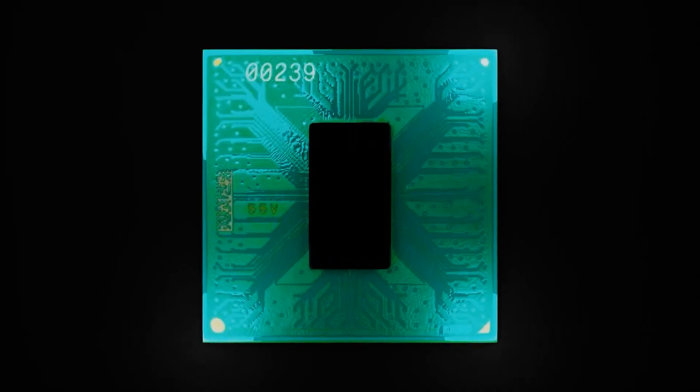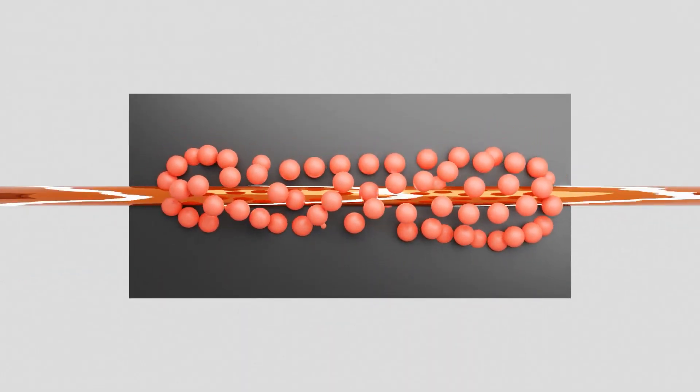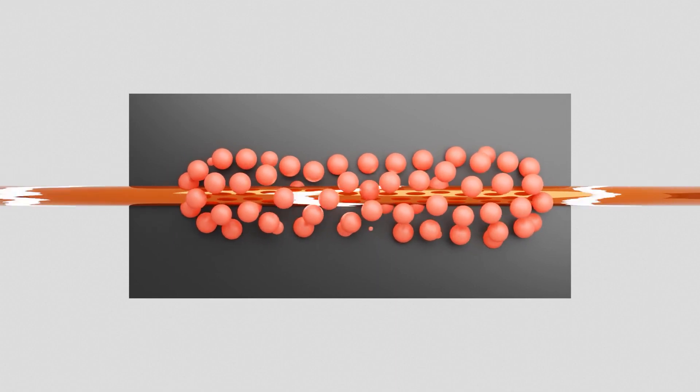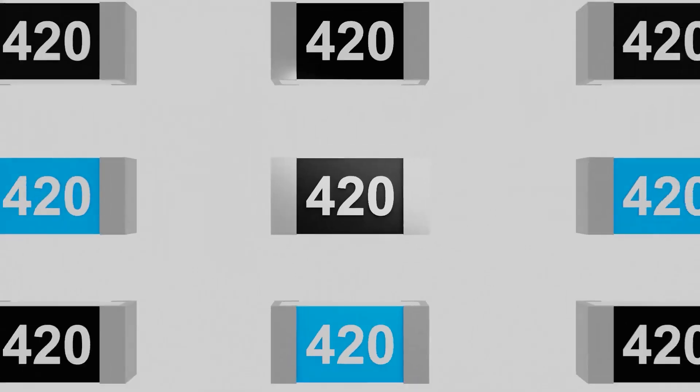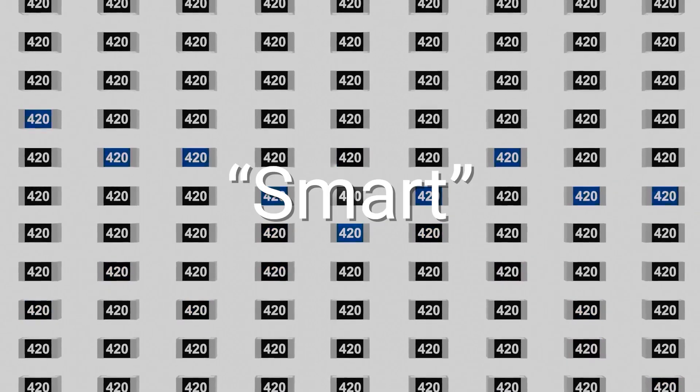Certain neuromorphic chips are able to mimic this learning by using special resistors. When you pass a current through the resistor, the impurities in the resistor shift. That resistor becomes better at conducting and the circuit will favor certain pathways or actions. The material on the chip is inherently smart.